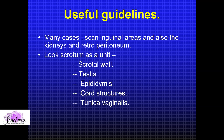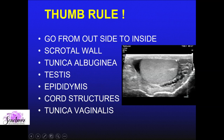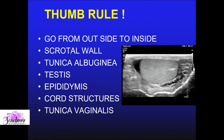In the scrotum itself, use a systematic approach — go from outside to inside. Start with the scrotal wall, then the hyperechoic Tunica albuginea surrounding the testes, then evaluate the testes themselves. Once you finish the testes, extend your scan to look at the epididymis, cord structures, and Tunica vaginalis. If you follow this protocol, you will be able to successfully evaluate most scrotal pathologies very confidently in day-to-day practice.